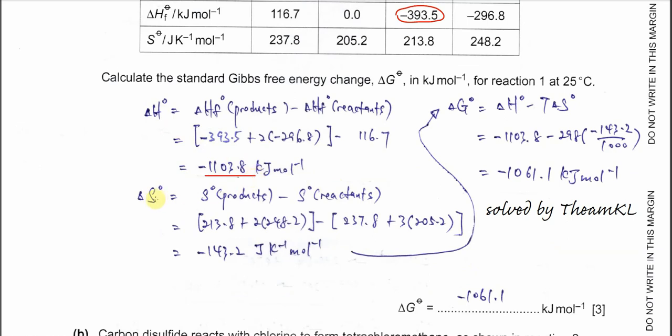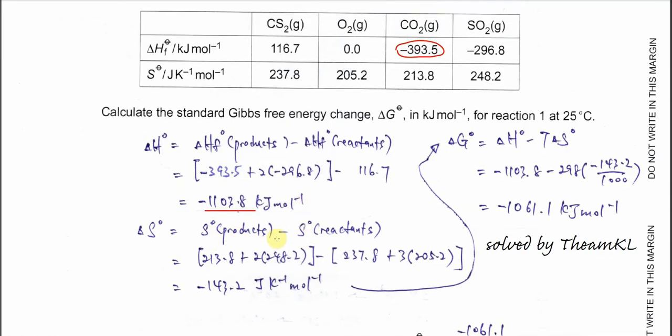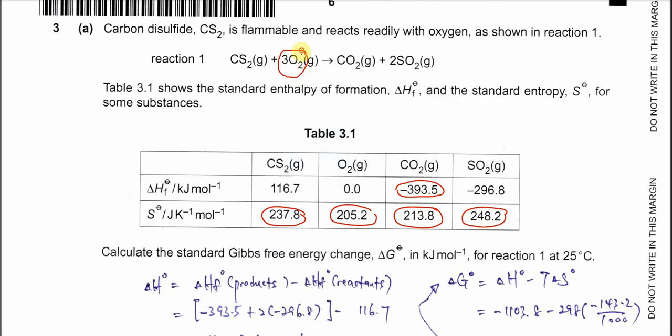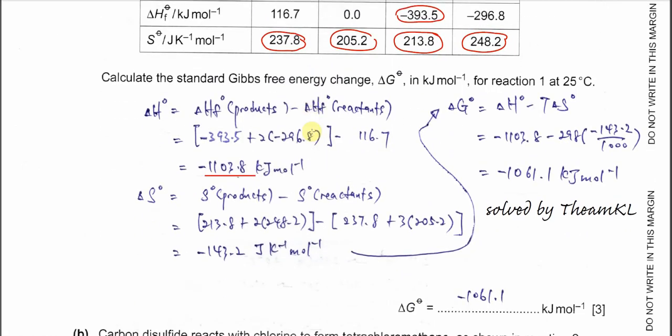The change in entropy uses similar calculation: molar entropy of products minus molar entropy of reactant. Substitute the values. Products are CO₂ plus 2 times SO₂ entropy, minus CS₂ entropy and 3 times oxygen entropy. The entropy change is -413.2 J/(K·mol).